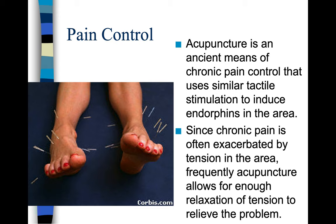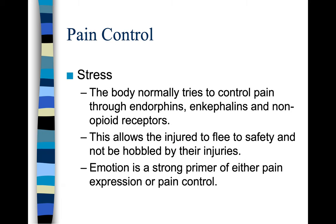Acupuncture is an ancient means of chronic pain control that uses similar tactile stimulation to induce endorphins in the area. Since chronic pain is often exacerbated by tension in the area, acupuncture frequently allows for enough relaxation of tension to relieve the problem. The body normally tries to control pain through endorphins, enkephalins, and non-opioid receptors — this allows the injured to flee to safety and not be hobbled by their injuries. Emotion is a strong primer of either pain expression or pain control. That is the end of chapter 8.